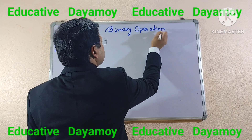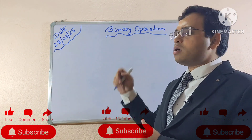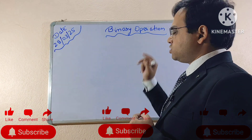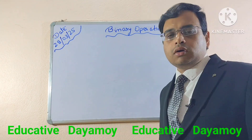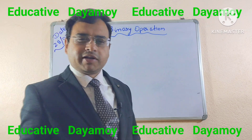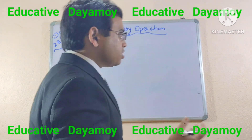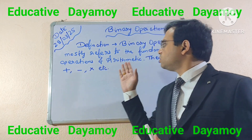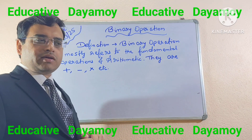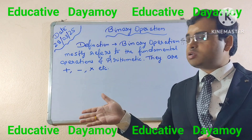Binary operation: as the word says, 'bi' always means two. So a binary operation is an operation between two numbers. The definition of binary operation is that it mostly refers to the fundamental operations in arithmetic that you have learned in lower classes — that is plus, minus, multiply, and divide. But there are other binary operations in algebra such as scalar dot product and vector cross product.